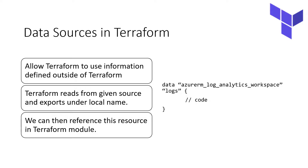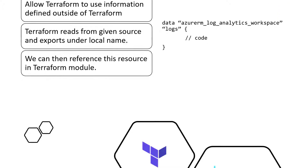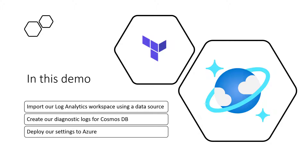In our demo, we will create our diagnostic logs for our Cosmos DB account and send them to Log Analytics. I already have a Log Analytics workspace created, so in order to send my diagnostic logs, I'm going to be using a Terraform data source. Data sources allow Terraform to use information defined outside of Terraform or defined by another Terraform configuration. A data block in Terraform will read from the given source and export the results under the given local name, which we then use to reference the resource in the same Terraform module. We'll use a data source to import our Log Analytics workspace, create our diagnostic logs configured to send to that workspace, and then deploy our changes to Azure.